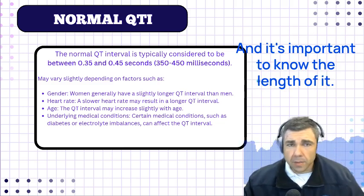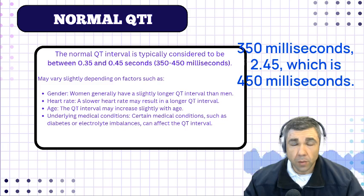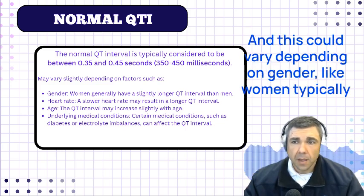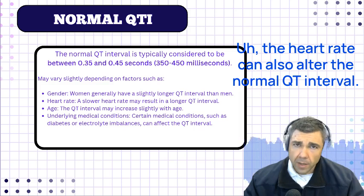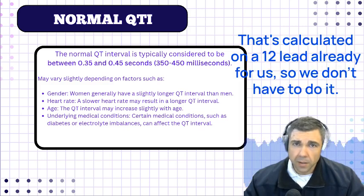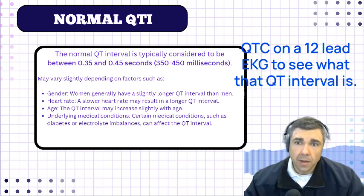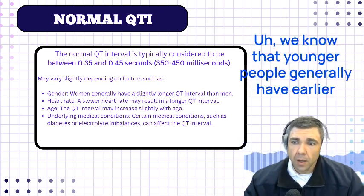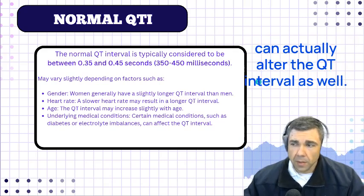The normal QT interval is considered to be between 0.35 — which is 350 milliseconds — to 0.45, which is 450 milliseconds. This can vary depending on gender; women typically have a slightly longer QT interval than men. Heart rate can also alter the normal QT interval. There's something called Bazett's formula that's already calculated on a 12-lead for us. We look at what we call the corrected QT interval, the QTc, on a 12-lead EKG. The patient's age can also alter the QT interval — younger people generally have earlier repolarization than the elderly. Underlying medical conditions can also alter the QT interval.